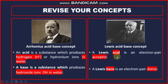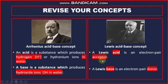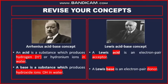Lewis ka acid-base concept hai. Iske mutabiq yaad karne ke liye do English ke words aur do chemistry ke words yaad karenge: acid aur base, aur acceptor aur donor. A se acid aur A se acceptor — an acid is an electron pair acceptor. Lewis base is an electron pair donor — Lewis base woh specie hai jo electron pair ko donate karne ki salahiyyat rakhti hai. Strength of an acid and base can be easily understood through resonance effect.